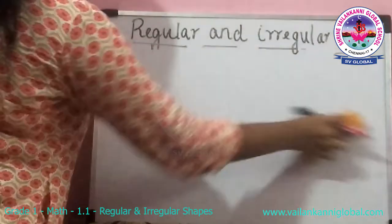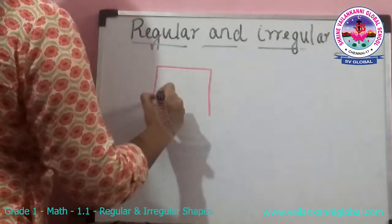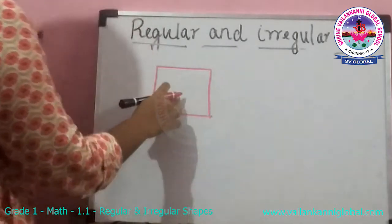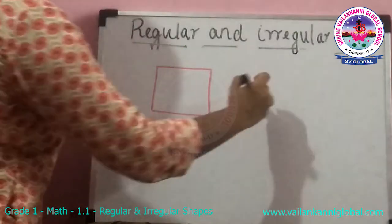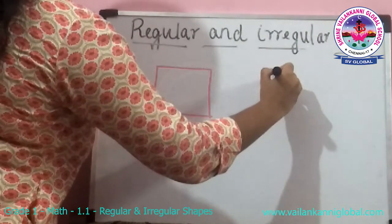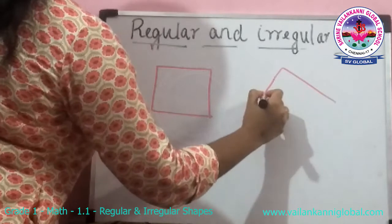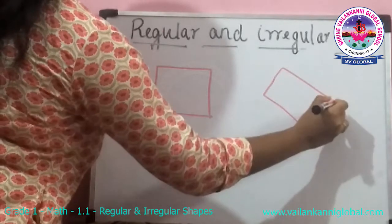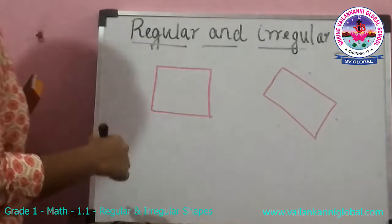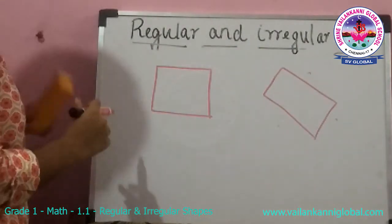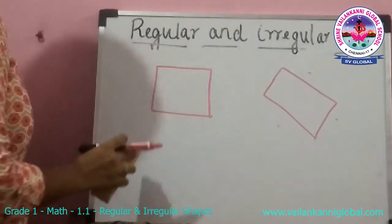This is a square, or you can call that as a regular shape because all the four sides are equal. Whereas, you can draw this also — this also has four sides, but all the four sides are not equal. So this is a regular square and this is an irregular square.